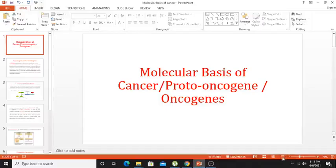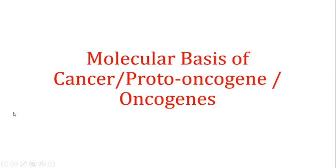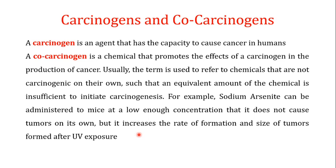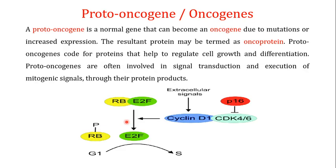Welcome back. In this video I want to focus on the molecular basis of cancer — the proto-oncogenes, the tumor suppressor genes, and the oncogenes. This is the fifth video in the series on cancer. In the last video I covered carcinogens and co-carcinogens: carcinogens are agents that have the capacity to cause cancer on their own, while co-carcinogens promote the effect of carcinogens without being able to cause cancer independently.